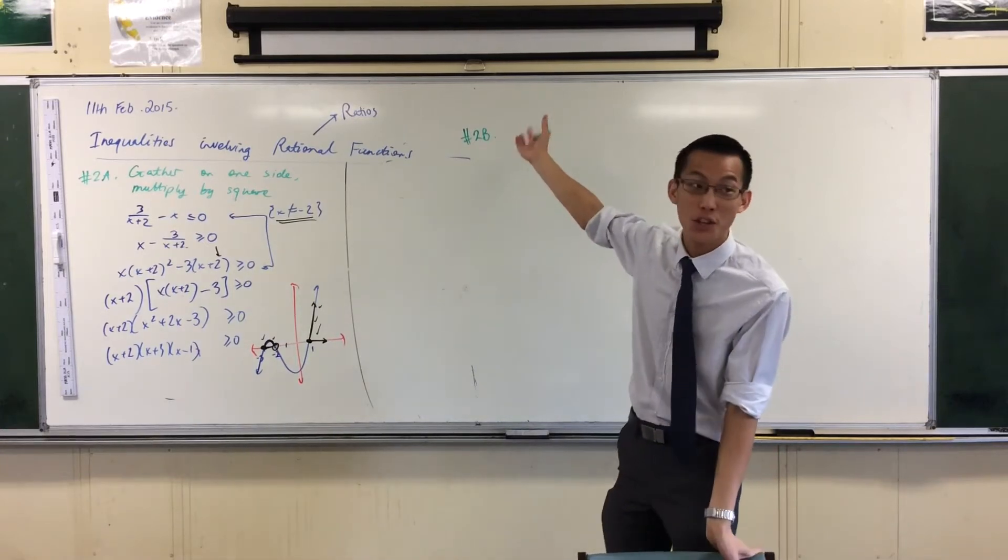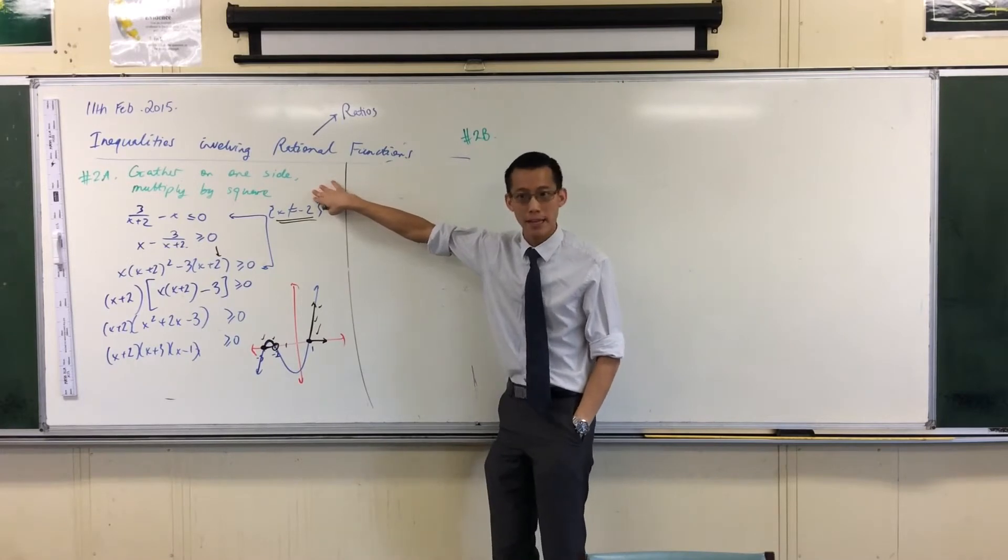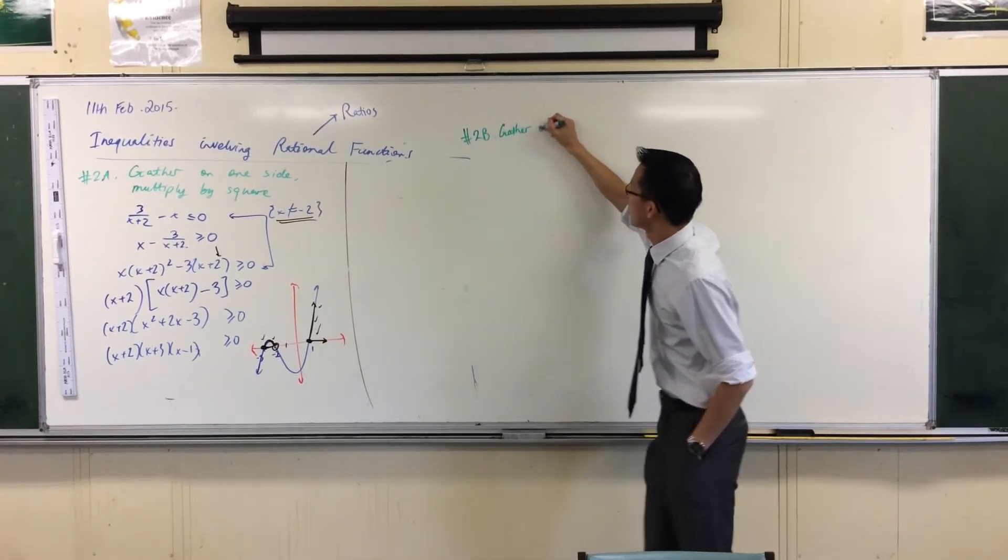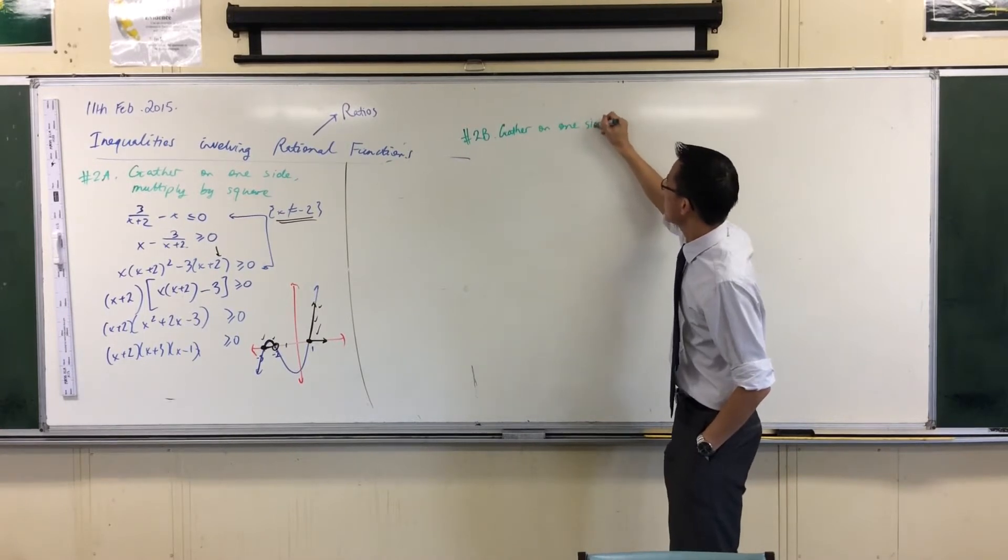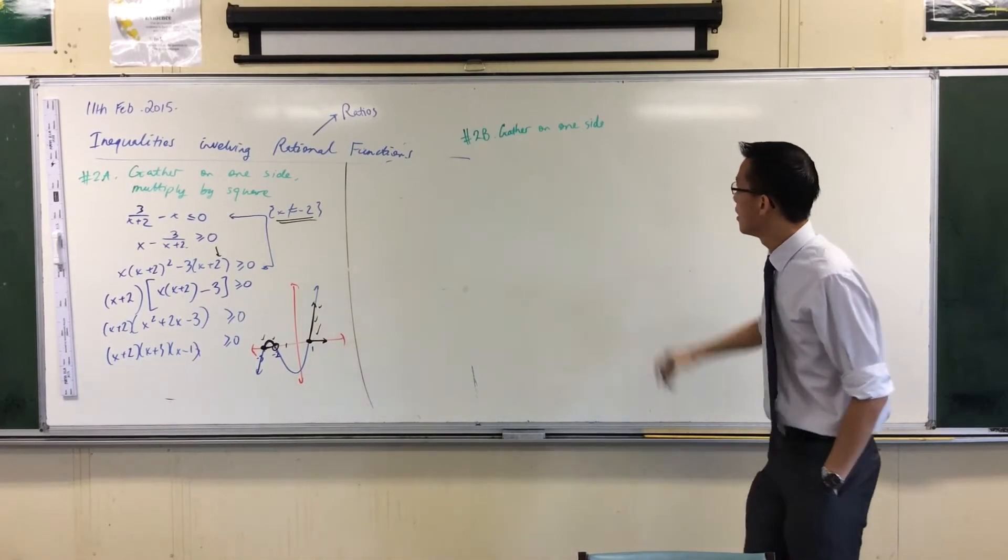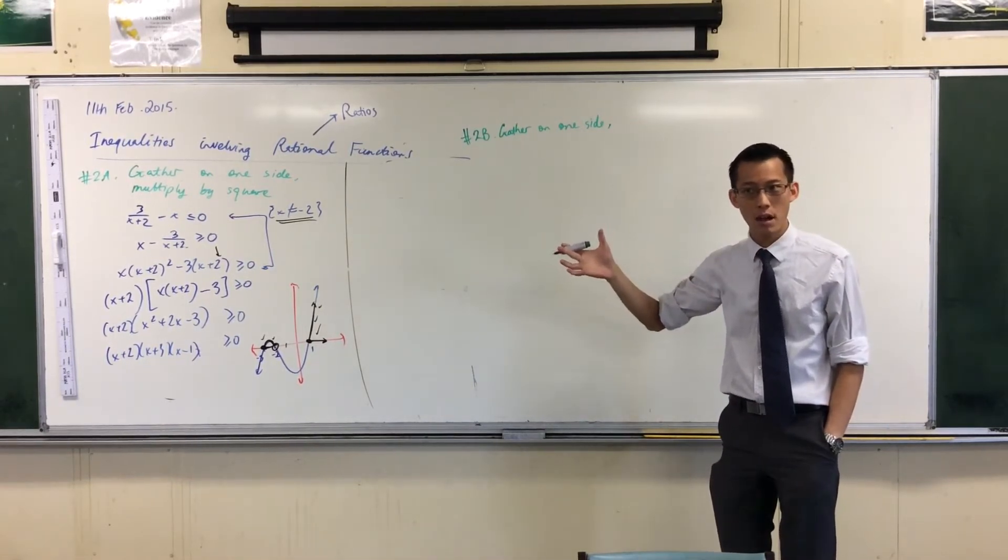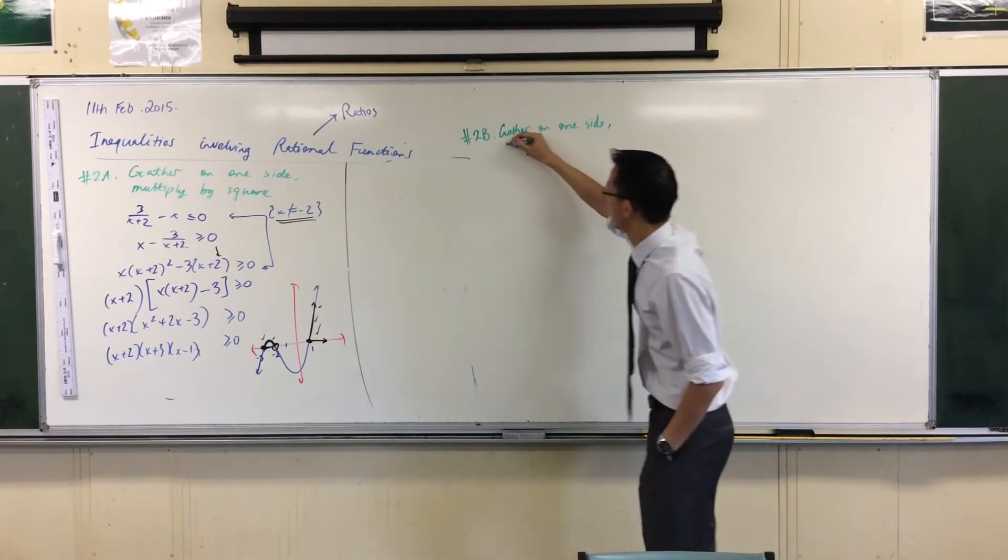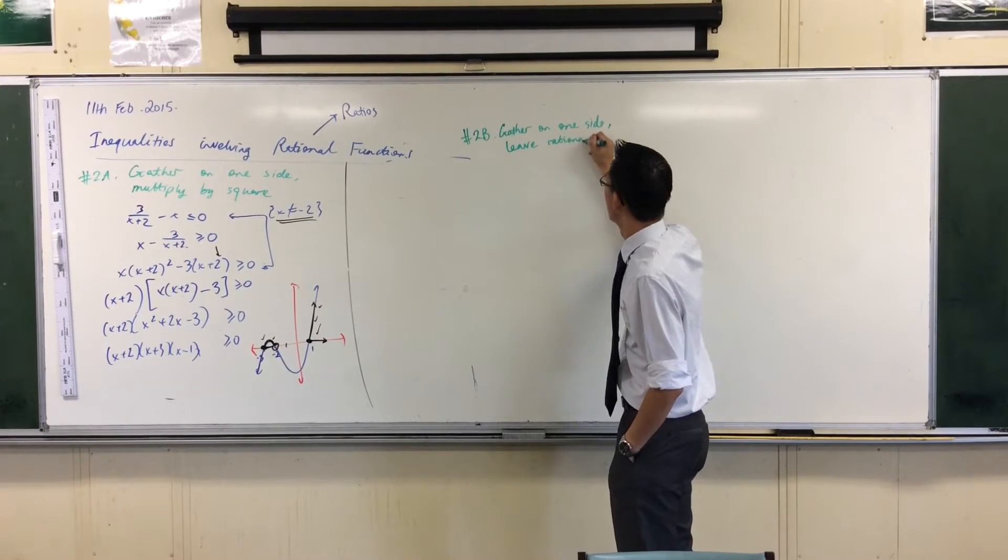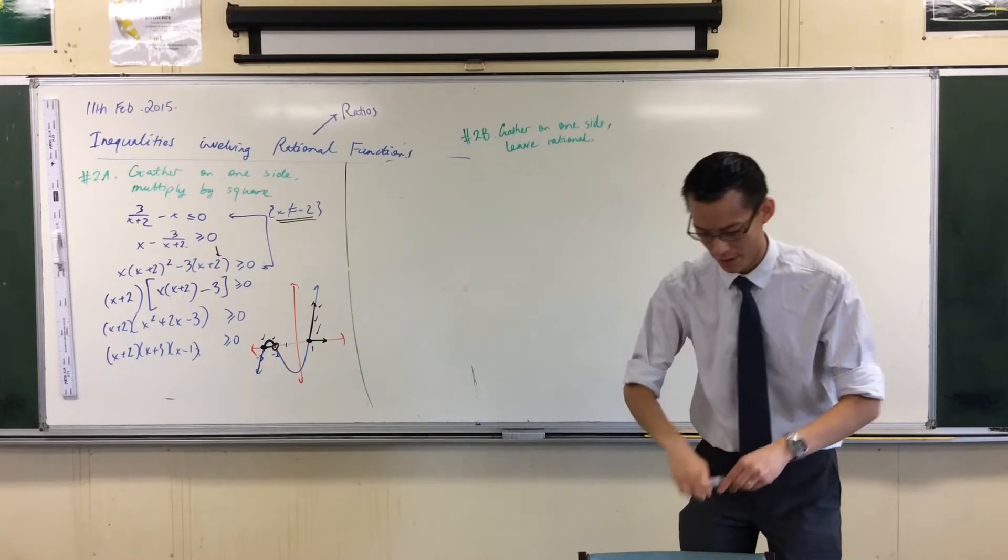I'm going to call this method 2b, approach 2b, because it shares something in common with this. Namely, I'm still going to gather everything on one side.